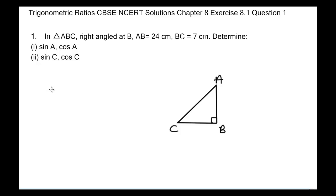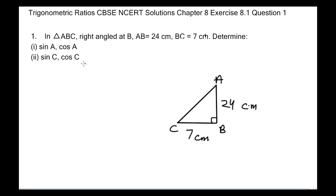CBSC and CRT solutions, Chapter 8, Exercise 8.1, Question 1. It is given that in triangle ABC, right-angled at B, AB is equal to 24 centimeters and BC is equal to 7 centimeters. We need to determine the values of sin A, cos A, sin C, and cos C. First, let's find the length of side AC.